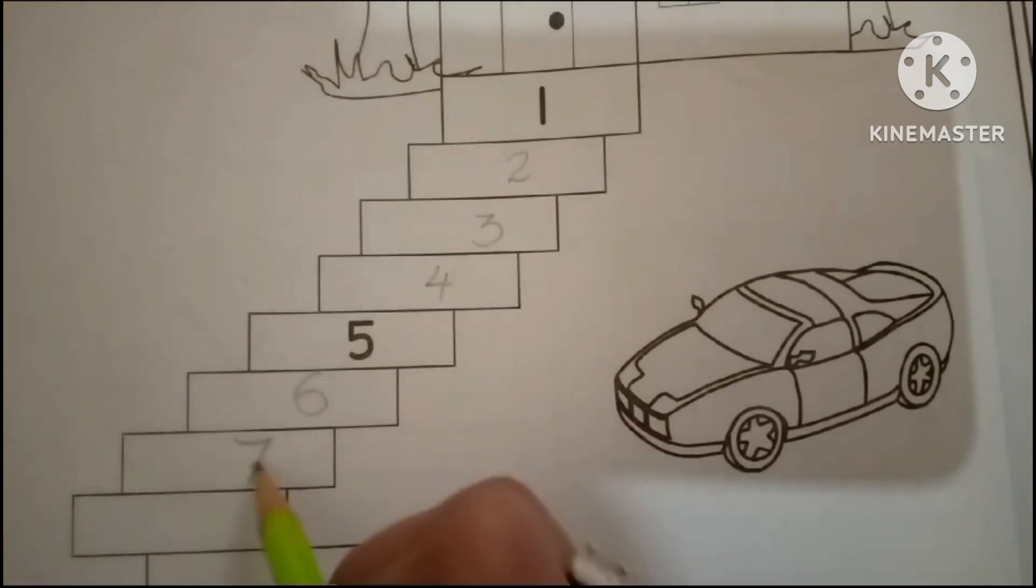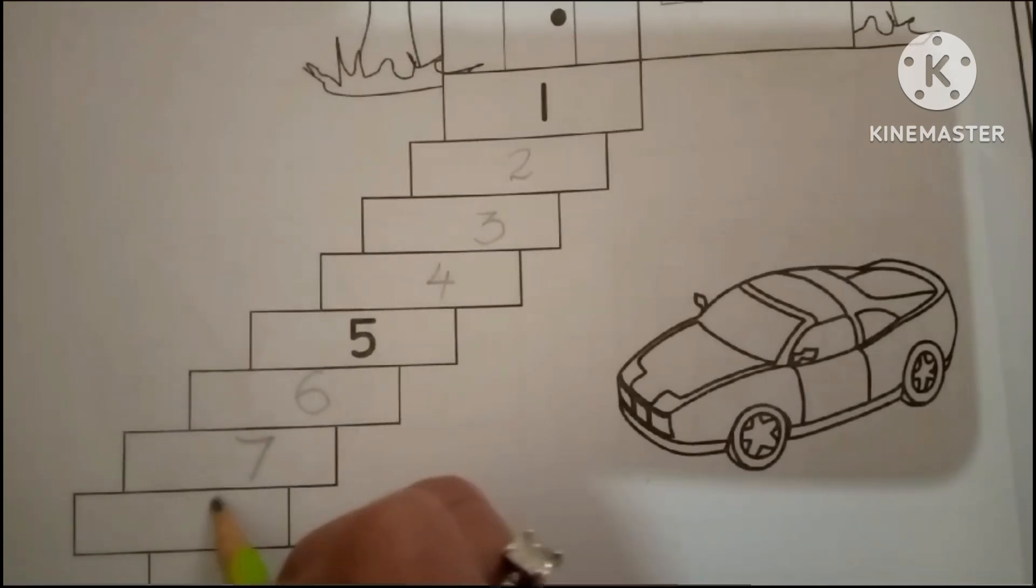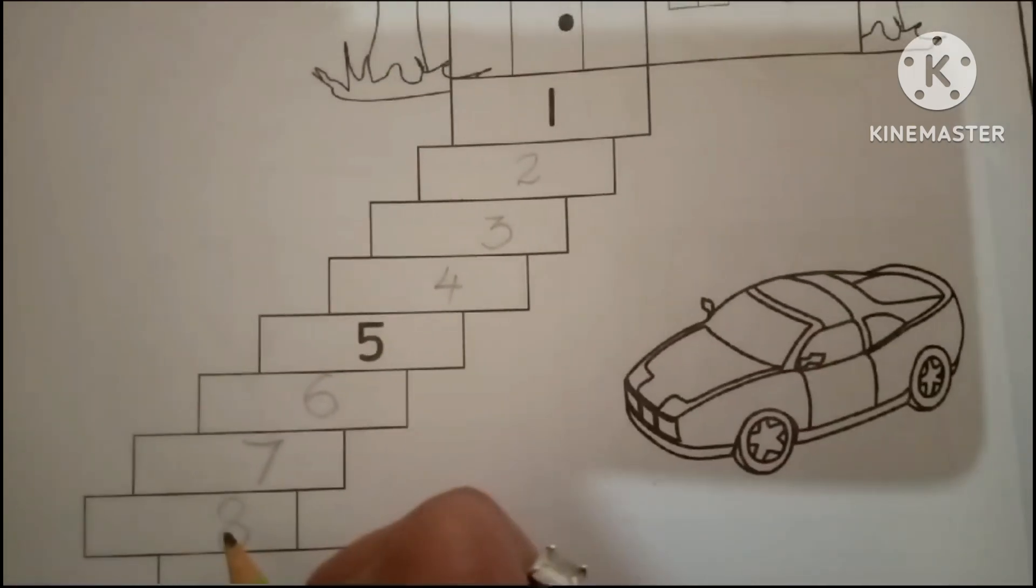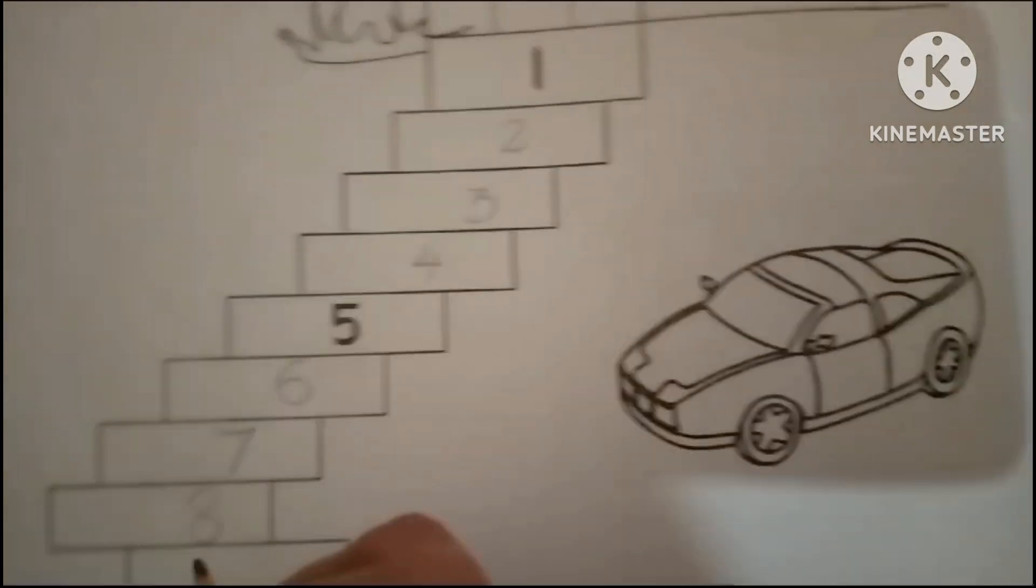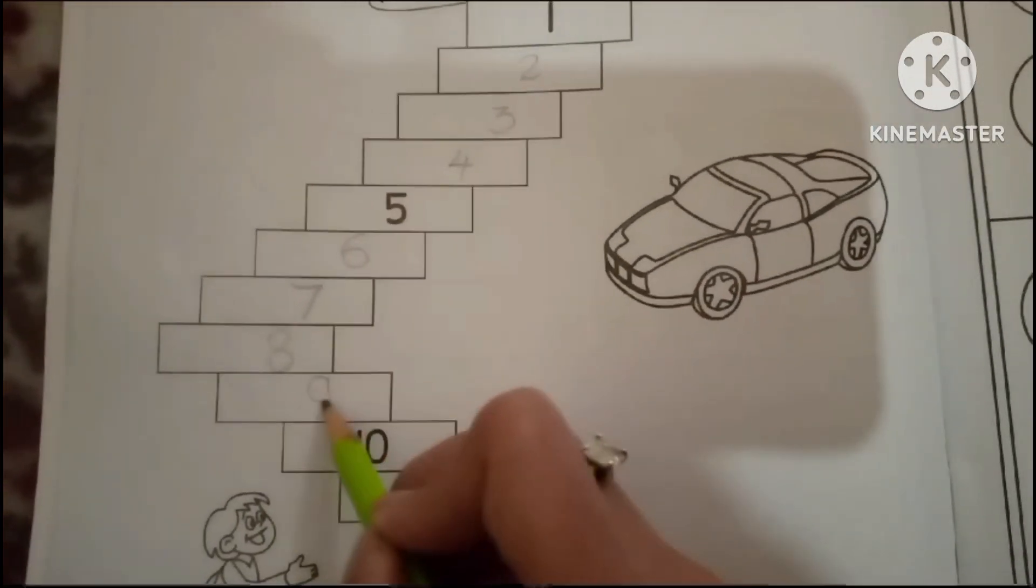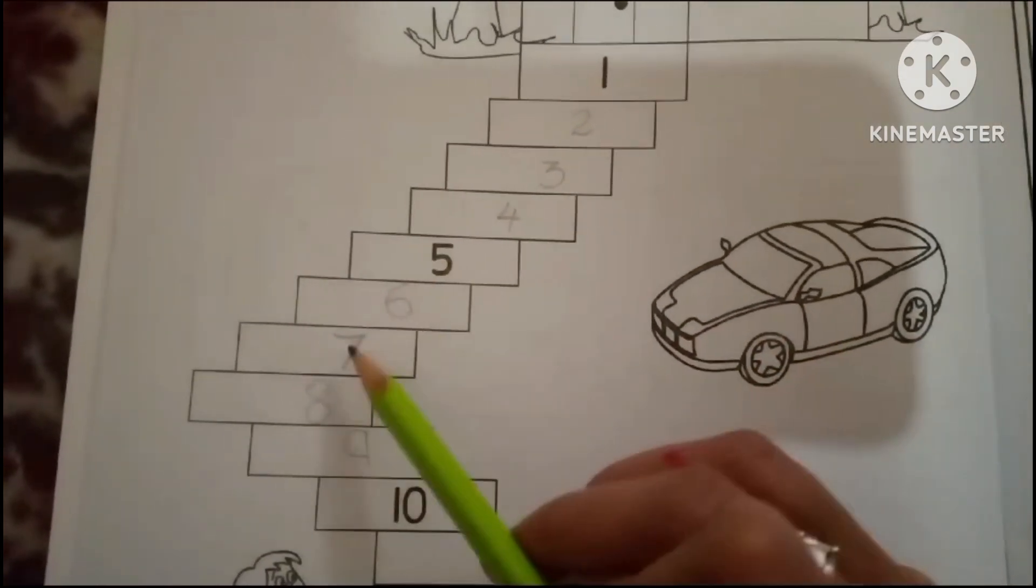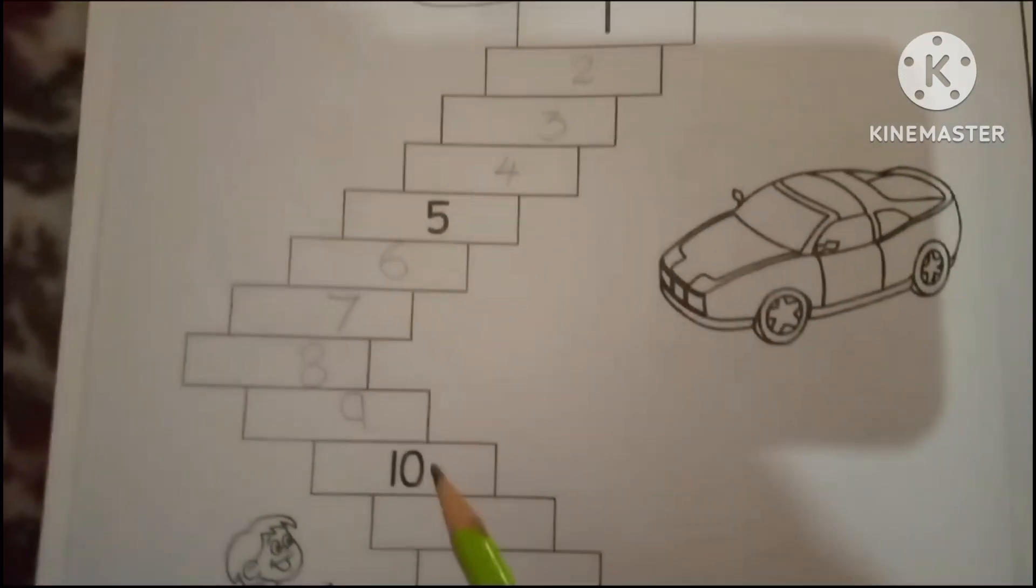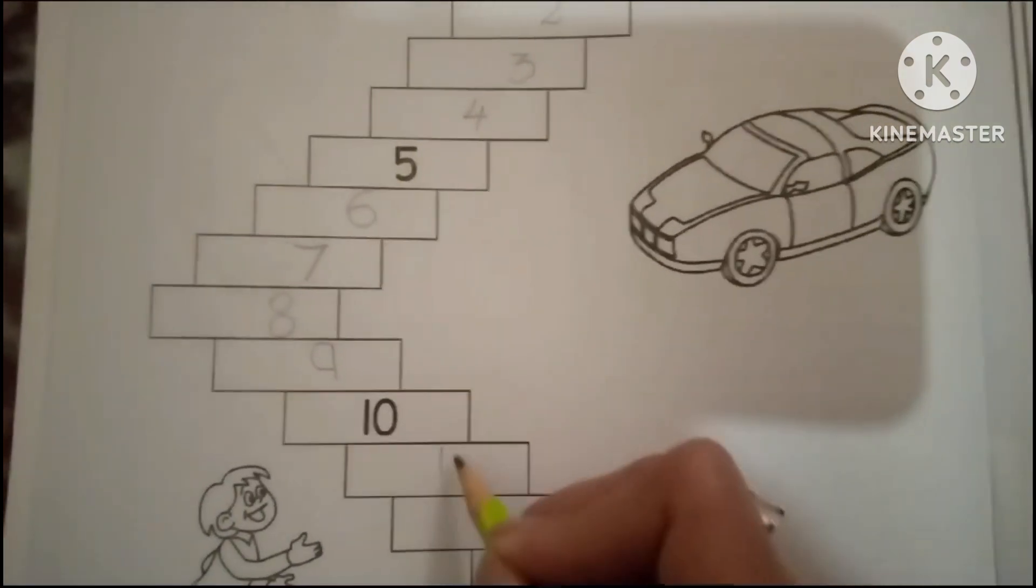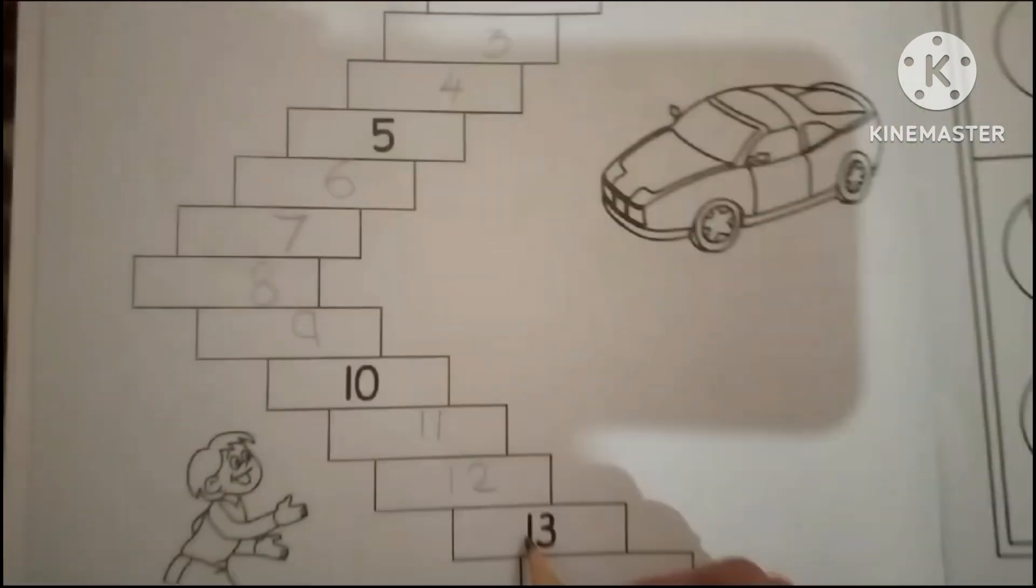Five, six, seven. What comes after seven? Eight, nine. One, two, three, four, five, six, seven, eight, nine, ten, eleven, twelve, thirteen.